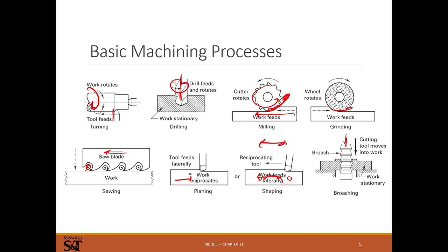Different methods suit different geometries. Revolve profiles we'll turn; holes we drill; surfaces we mill; hard materials we can grind precisely; cutting into pieces we saw; shaping surfaces we plane; spline-like features we can use a shaper for; square-cornered holes or rifling in a barrel are about the only cases where broaching works. Each process has its strengths and weaknesses, and we'll cover most through the course.